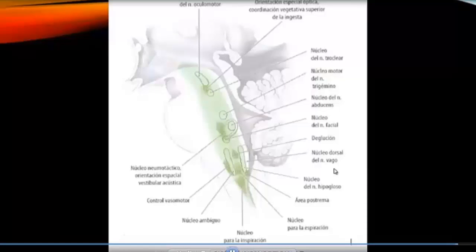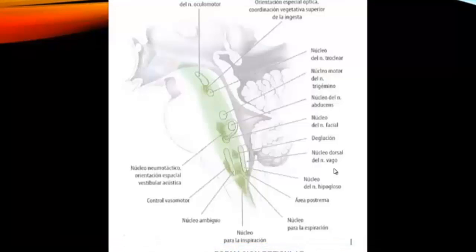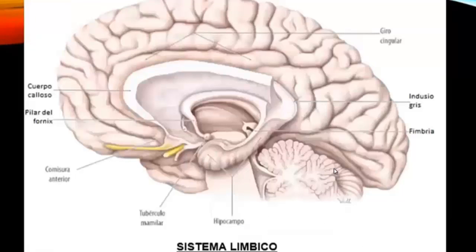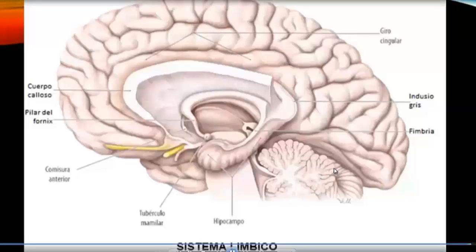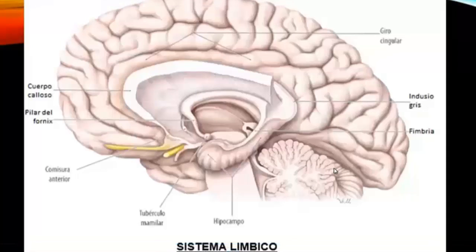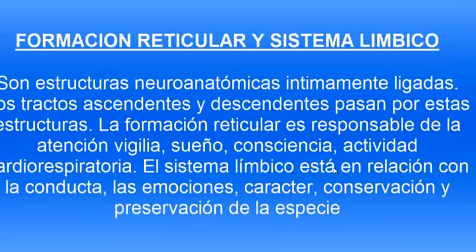Both ascending and descending fibers or tracts pass through the reticular substance and through the limbic system. These two structures have fundamental importance and are intimately linked. One is related to wakefulness and the other to emotions. For example, a stimulus will have a particular characteristic in its corresponding response. The reticular formation and limbic system are intimately linked neuroanatomic structures. The reticular formation is responsible for alertness, wakefulness, sleep, and consciousness. The limbic system is related to behavior.